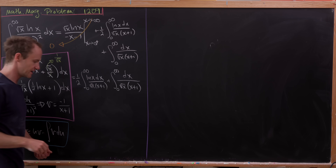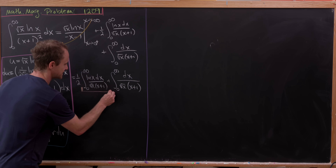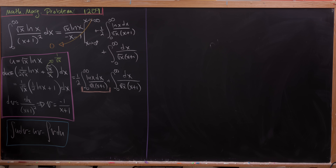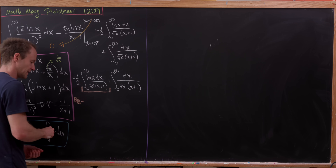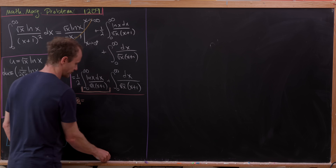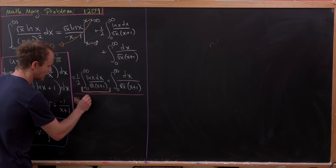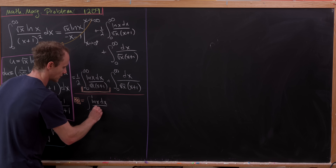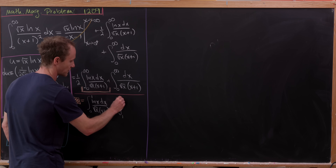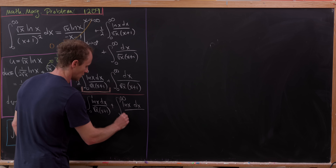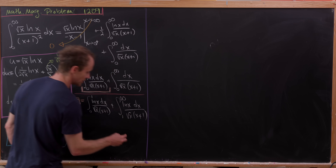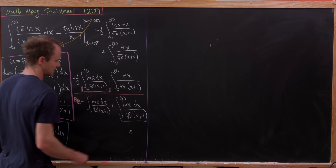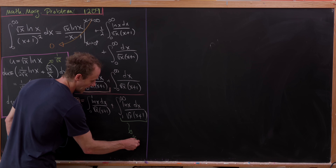Now I'd like to do a bit of analysis on the integral involving the natural log and see if we can simplify it. I'll split it into two pieces: the integral from 0 to 1 of ln(x) dx / (√x · (x+1)) plus the integral from 1 to ∞ of ln(x) dx / (√x · (x+1)). This motivates us to use the substitution y = 1/x in the second integral, which is the same as x = 1/y, or dx = −dy/y².